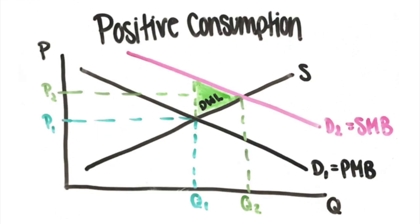The other example is positive consumption, where taking medicine may stop the spread of an illness. This is an example of how consumption gives benefit to others, and a positive externality also produces a smaller quantity than needed. On this graph, the social marginal benefit is greater than the private marginal benefit, and at Q2, it is socially efficient because the social cost is equal to the social benefit.